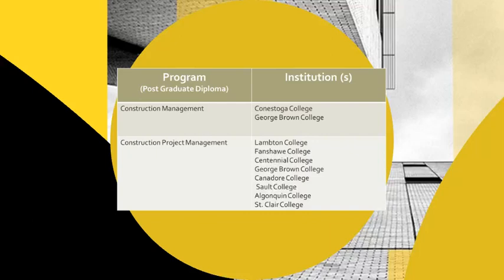There's also the college level, where many different institutions offer construction management and construction project management postgraduate programs. Another table gives us a very good understanding of the types of programs available. Some may differ slightly in naming, but the idea is to equip people — whether architects, engineers, or those from a business background — with the knowledge and skills needed to succeed in the construction industry, typically culminating in a postgraduate diploma.